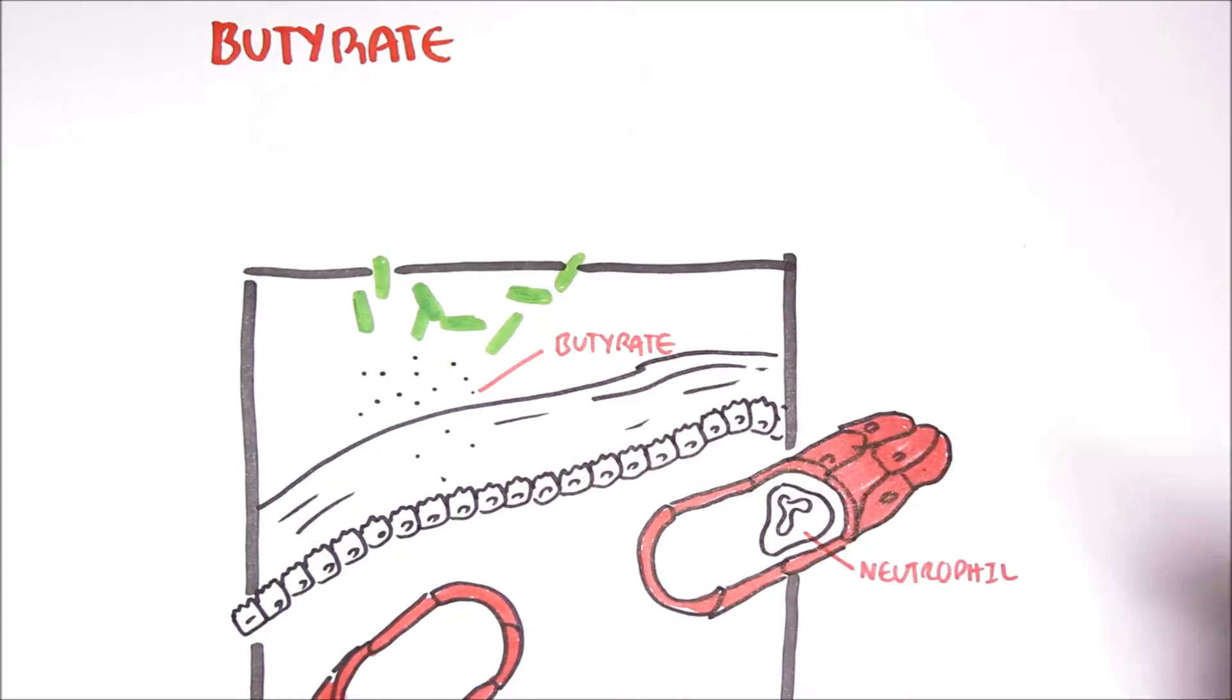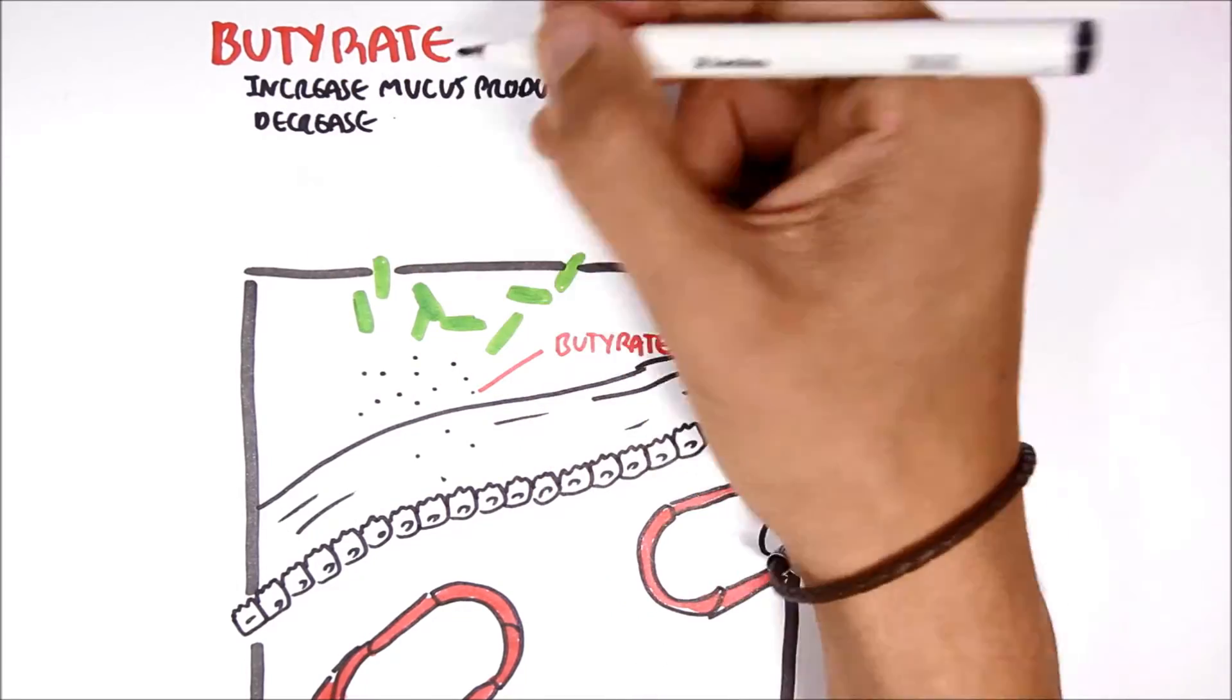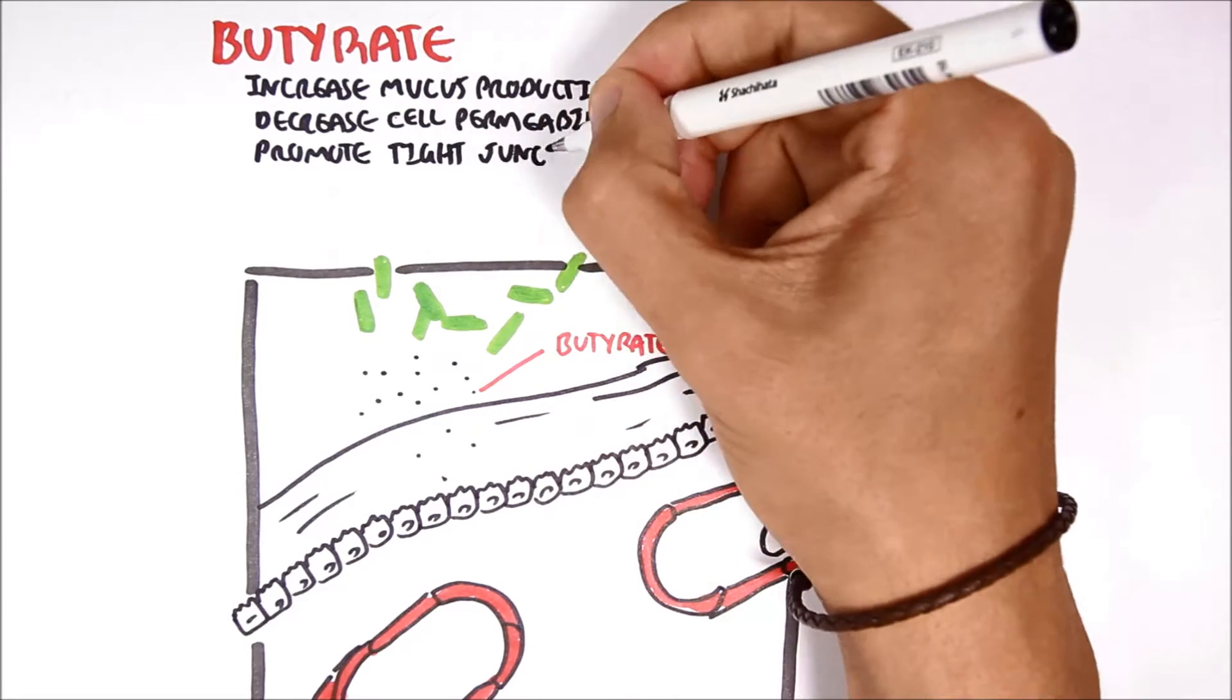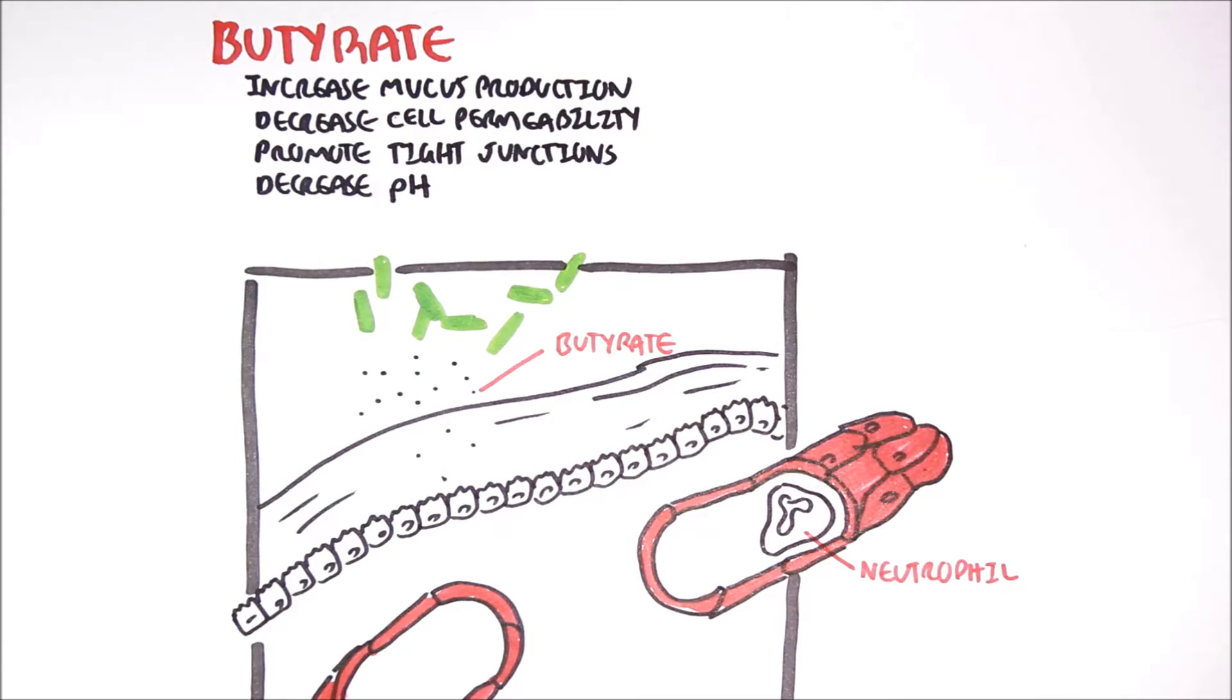The effects butyrate have on the colon in general include increasing mucus production, decreasing cell permeability, promoting tight junctions, and decreasing pH. These effects all improve the colonic defense barrier, leading to enhanced protection against luminal antigens. Of course, butyrate does more than this, according to literature.